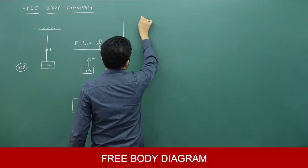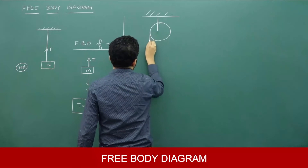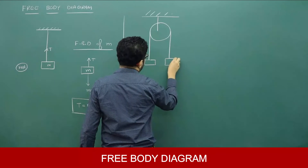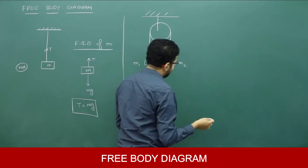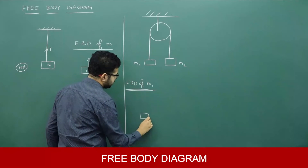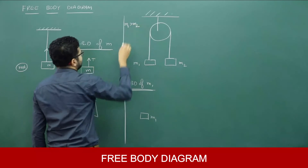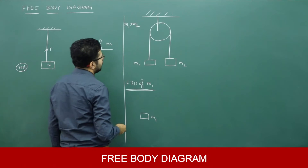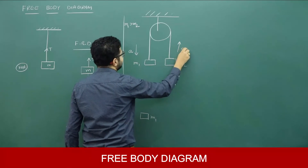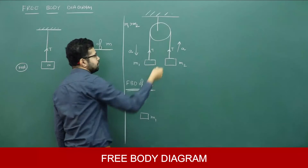Now say I have a pulley here. There is a mass m1 on one side and a mass m2 on the other side. How to write the free body diagram of m1 and m2? Say in this case m1 is greater than m2. If m1 is greater than m2, m1 should come down and m2 should go up. Acceleration will be in this direction. And since it is the same string, tension should be the same throughout.